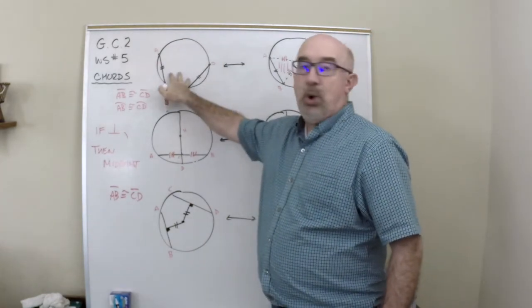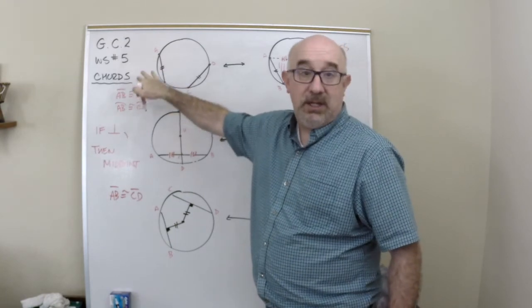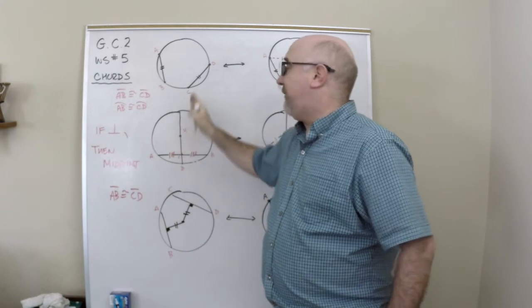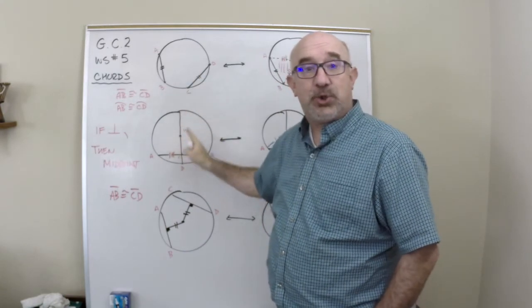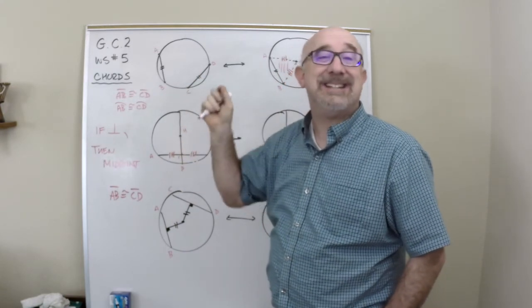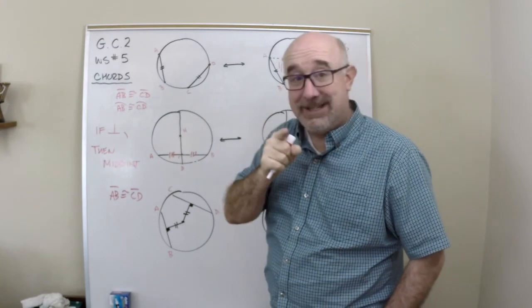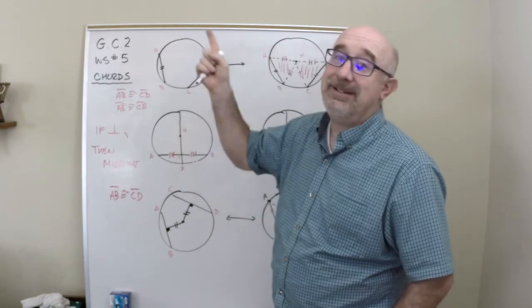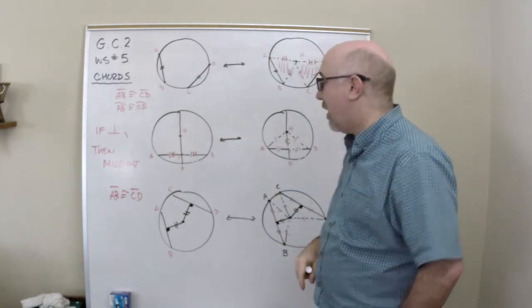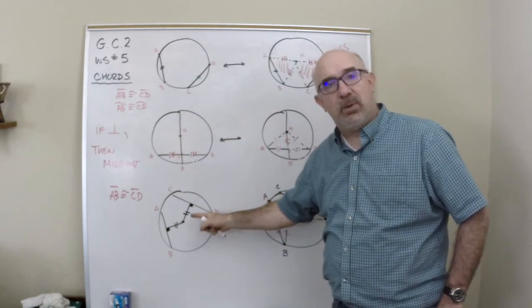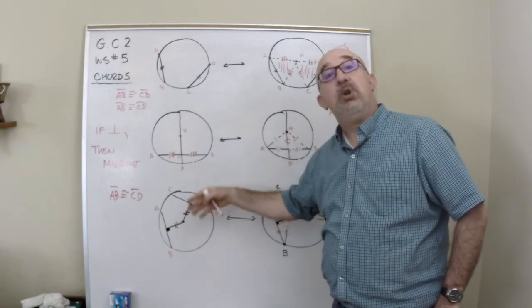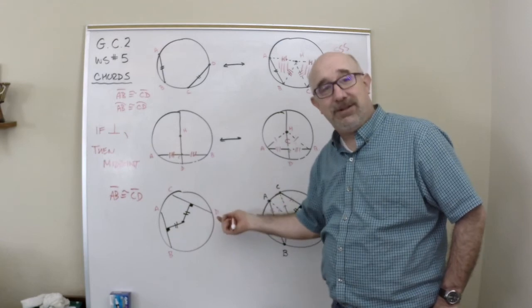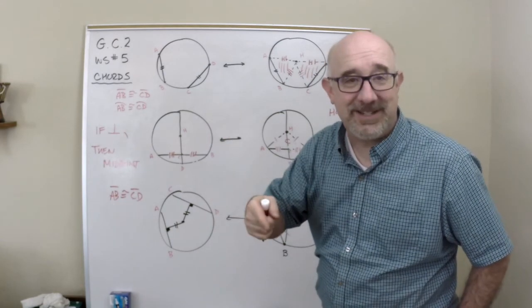Equal chords means equal arcs. Equal arcs mean equal chords. If a diameter or radius strikes a chord at 90 degrees, it's hitting the midpoint. If it's going through a midpoint, it's hitting at 90 degrees. If you're the same distance away from the center, you are congruent chords. If you're congruent chords, you are the same distance from the center.